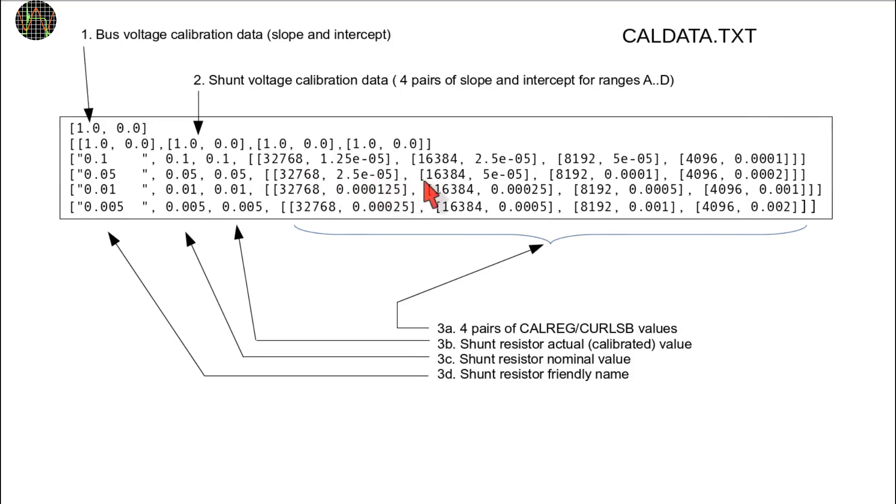As I mentioned, you could just put zeros in there but the little utility I mentioned in the previous Powermon video can be used to produce these values.